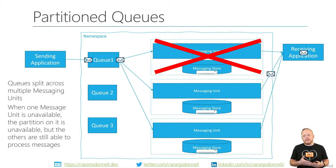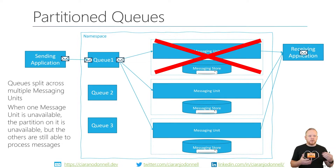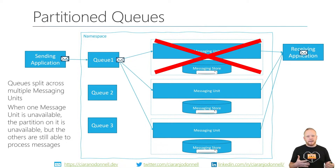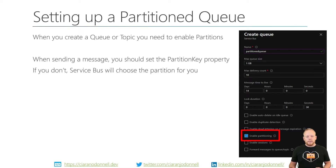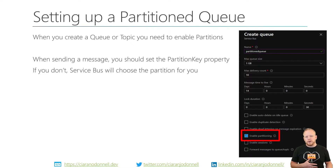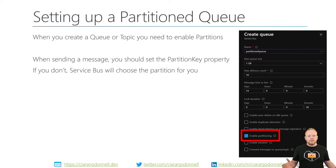When we talked before about how competing consumers take the next message from the front of the queue, what will happen with a partitioned queue is that the next message available may not be the next message that was sent — it'll be the next message available on a messaging unit that's still available. When we set up partitioned queues, we have to do that when we create them. You can't enable or disable partitioning after the fact, because instead of being allocated to a single messaging unit, it gets allocated across 16 messaging units, and that has to happen during the create for that queue or topic and subscription pair.